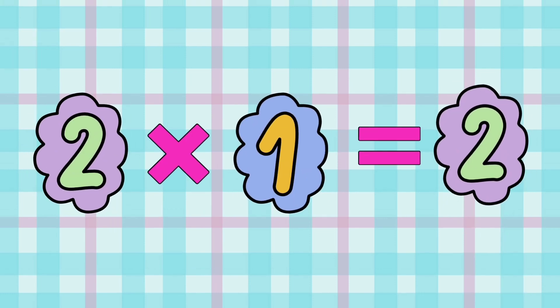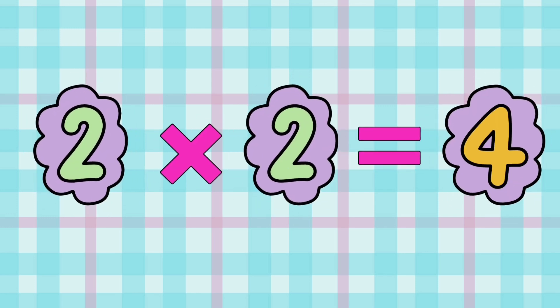2 x 1 is equal to 2. 2 1s are 2. 2 x 2 is equal to 4. 2 2s are 4.